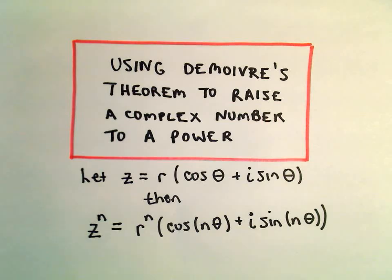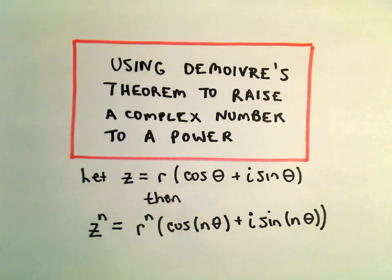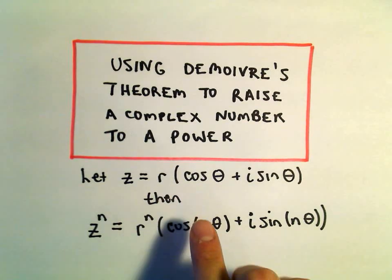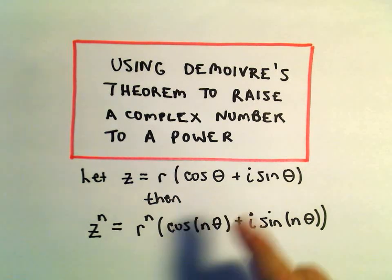And it's actually extremely easy. If you have a complex number z in polar form, so r times the quantity cosine theta plus i sine theta,